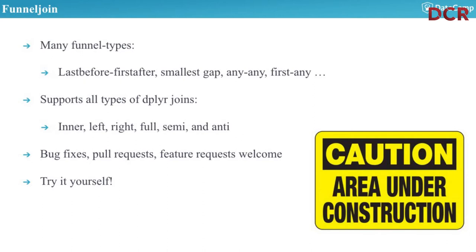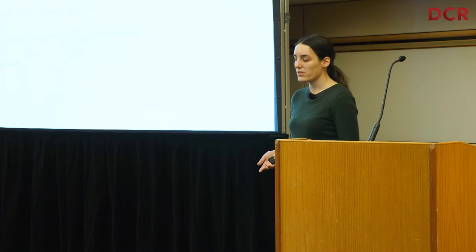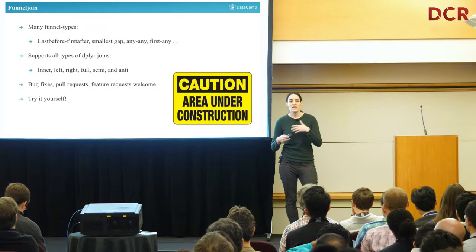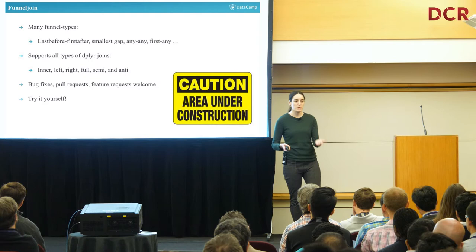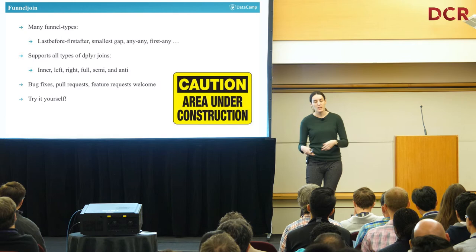FunnelJoin has many different funnel types: last before, first after, smallest gap, any, etc. It supports all types of dplyr joins — left, anti, semi, etc. Bug fixes, pull requests, and feature requests are all welcome on GitHub. It is still under construction but actively used at DataCamp. It also works on remote tables — if you've used dbplyr for translating SQL code in R, FunnelJoin will work with remote tables because it uses dplyr on the back end.